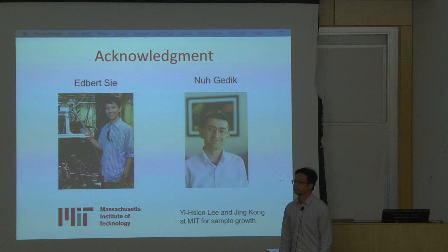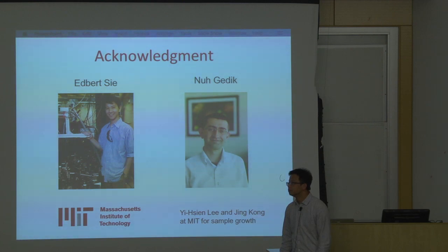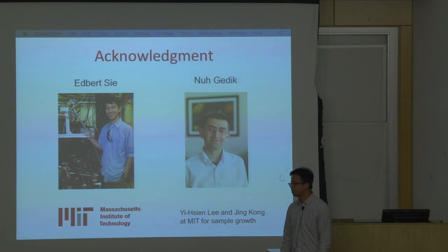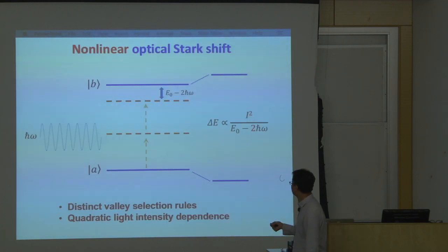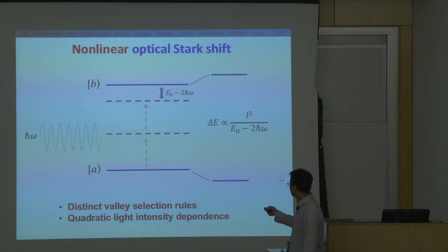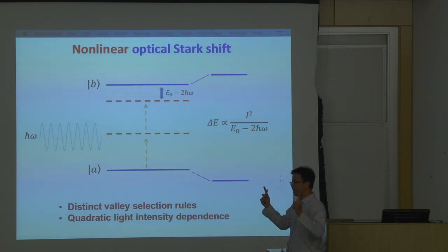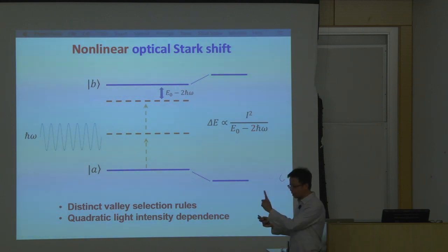Question: Since it's time reversal... When you use linear polarized light, you drive both valleys, so there's no valley selection. When you use one circular polarization and change the angle or photon number, you can alternate the valley selection.